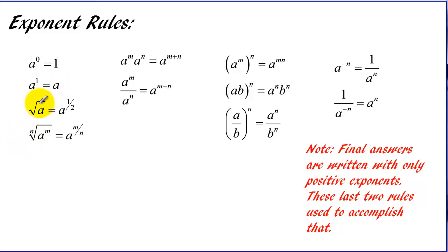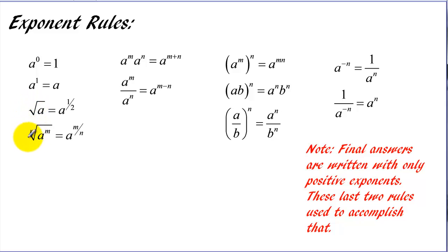When we're working with radicals, it will frequently make the problem easier if we convert the radicals to fractional exponents. This will be particularly true in higher level math. The regular square root of a quantity is equivalent to that quantity raised to the one-half power. The general rule: there are other roots — square root, cubed root, fourth root, fifth root, etc. The quantity under the radical sign may have an exponent. The root becomes the denominator of the exponent, and any exponent under the radical sign becomes the numerator.